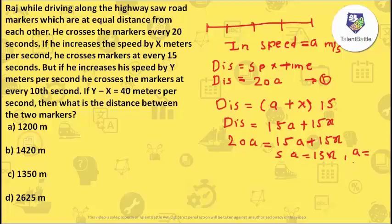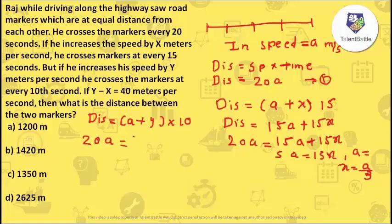Similarly, for y: when speed is increased by y, new speed is a plus y, and he crosses markers every 10 seconds. So the equation becomes: 20a equals 10(a + y), which gives 10a equals 10y, therefore a equals y. So I now have the values of x and y in terms of a: x equals a/3 and y equals a.